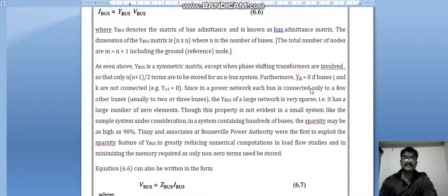So that only n times (n plus 1) by 2 terms are to be stored for n buses system. Furthermore, Yik equals zero if buses i and k are not connected. For example, Y14 equals zero. Since in the power network each bus is connected to only a few other buses, the Ybus of a large network is very sparse.